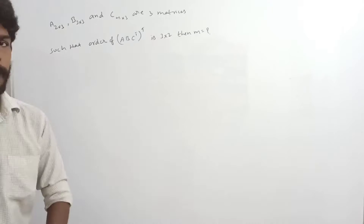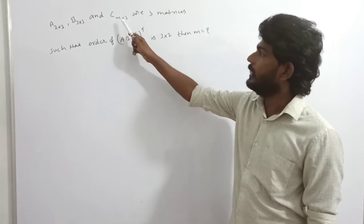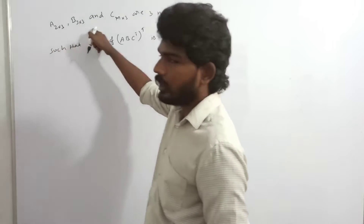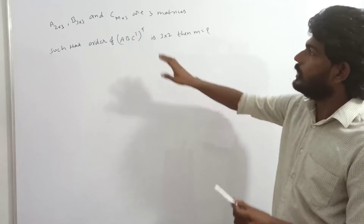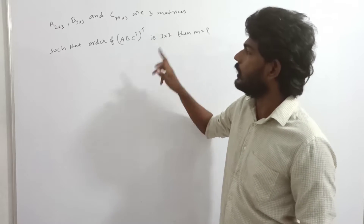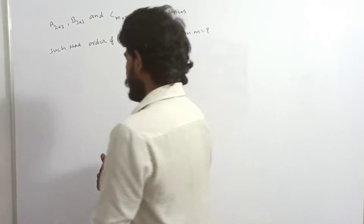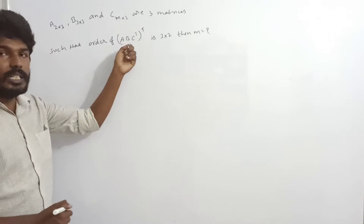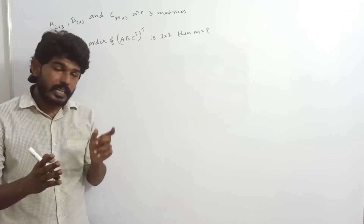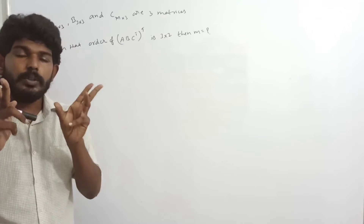Problem: A is of order 3 by 2, then find M value. For matrix multiplication to exist, the number of columns of the first matrix must equal the number of rows of the second matrix. So A is a matrix of order 2 by 3. We multiply B which is 3 by 3.